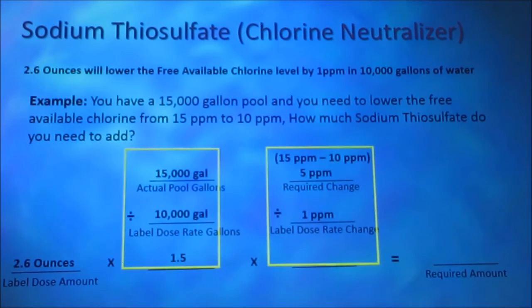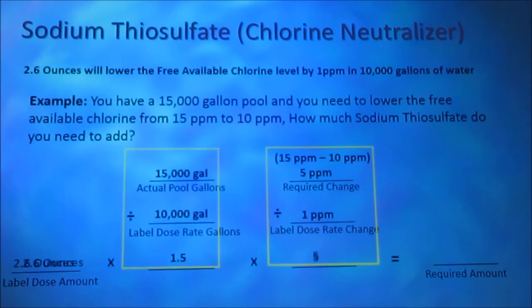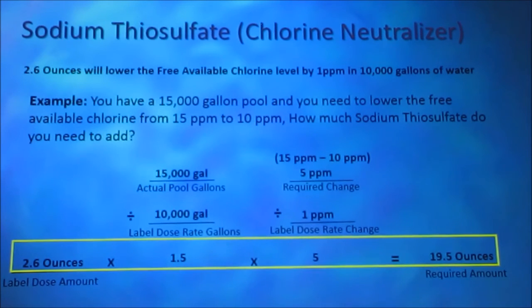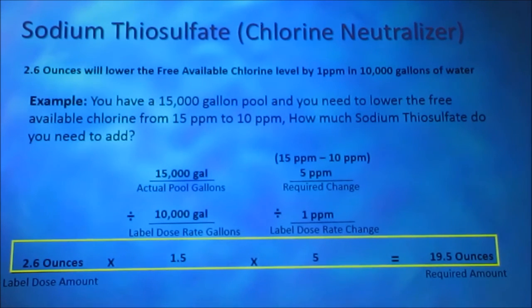We then divide our required change by our label dose rate change. 5 divided by 1 is 5. We wish to lower the chlorine level by 1 part per million 5 times. We multiply from left to right: our label dose amount of 2.6 ounces times 1.5 times 5 equals 19.5 ounces.